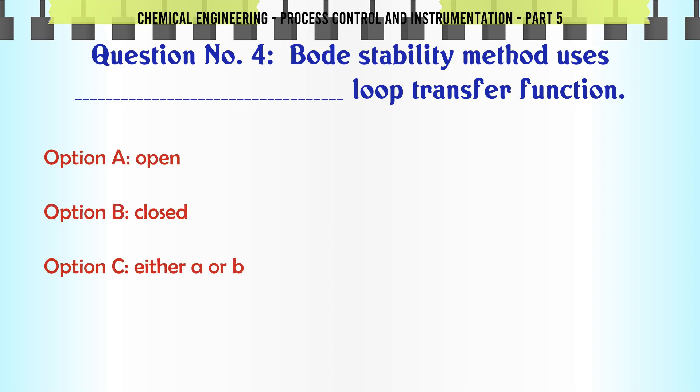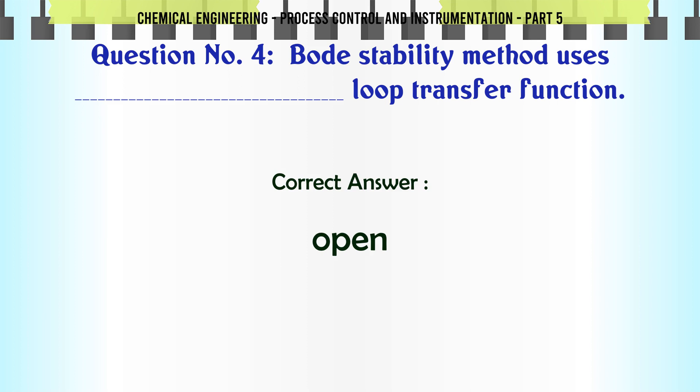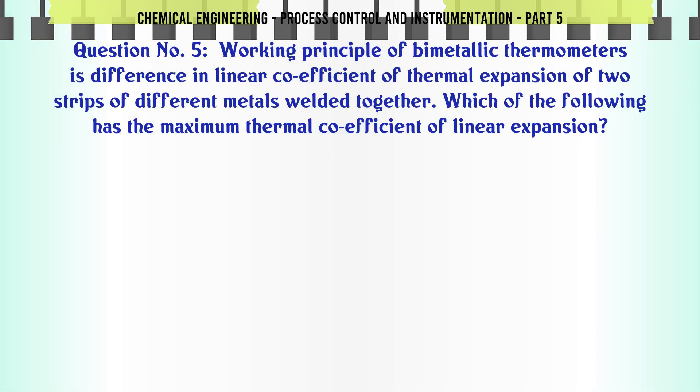Bode stability method uses loop transfer function: A. Open. B. Closed. C. Either A or B. D. Neither A nor B. The correct answer is Open.